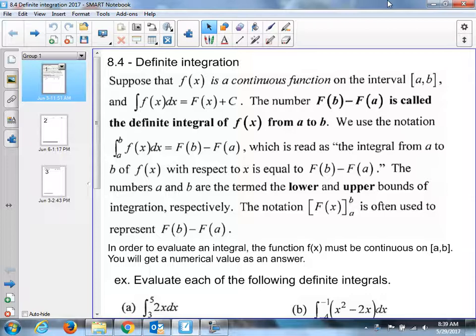Now I'm going to read through this with you a little bit. Let's see if we can make some sense of this. Suppose that f of x is a continuous function on this interval from a to b. So it's like 3 to 7 is the a to b idea. And the integral, that's what that means, of the function with respect to x is equal to big F of x plus c.